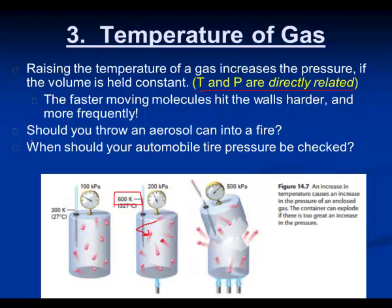A practical example: throwing an aerosol can into a fire. If the ambient temperature is around 295 kelvins and the fire reaches 600–700 kelvins, you more than double the temperature. The pressure inside the can may go up two to two-and-a-half times, potentially exceeding what the walls can handle, causing it to explode.